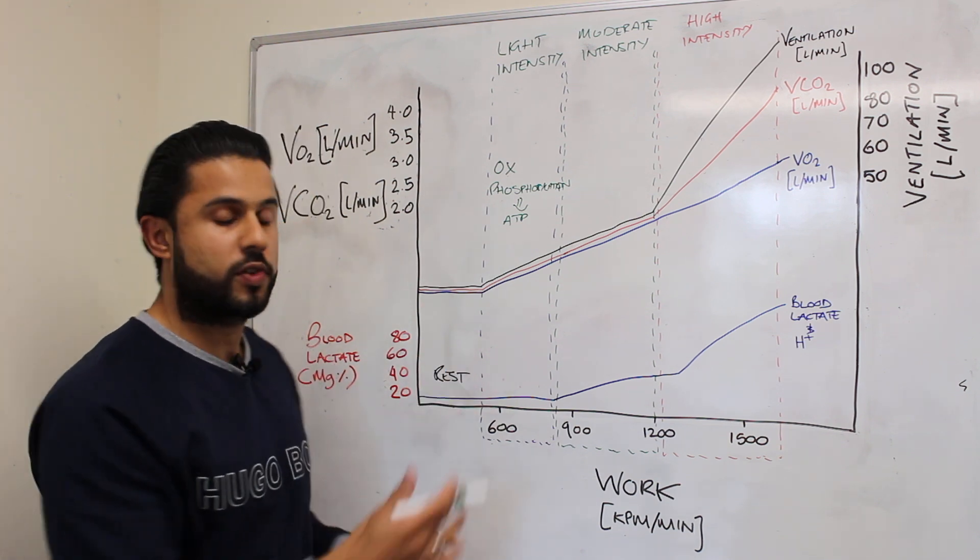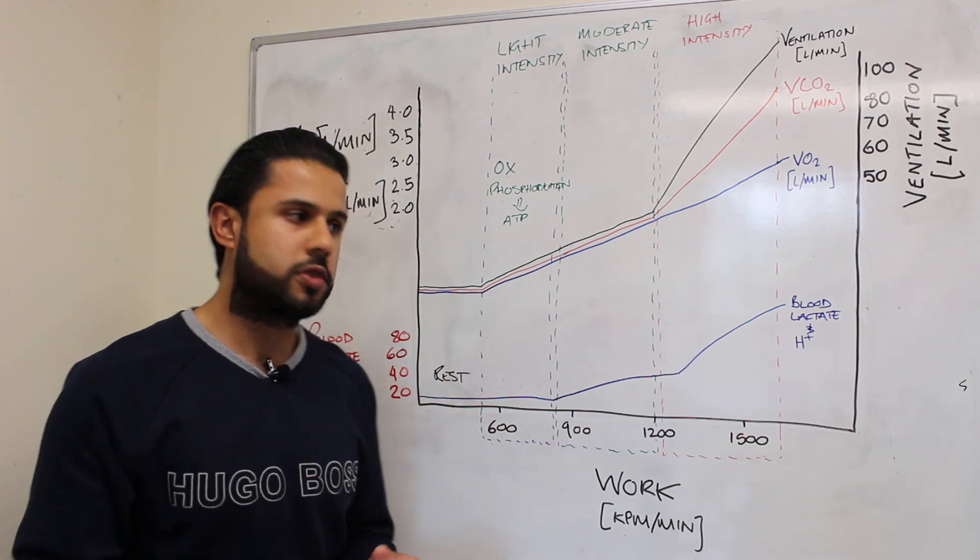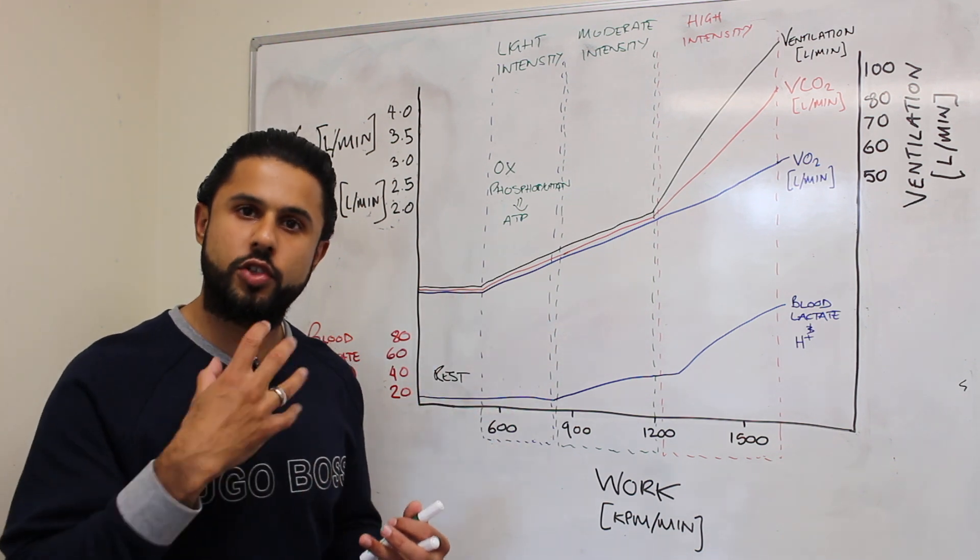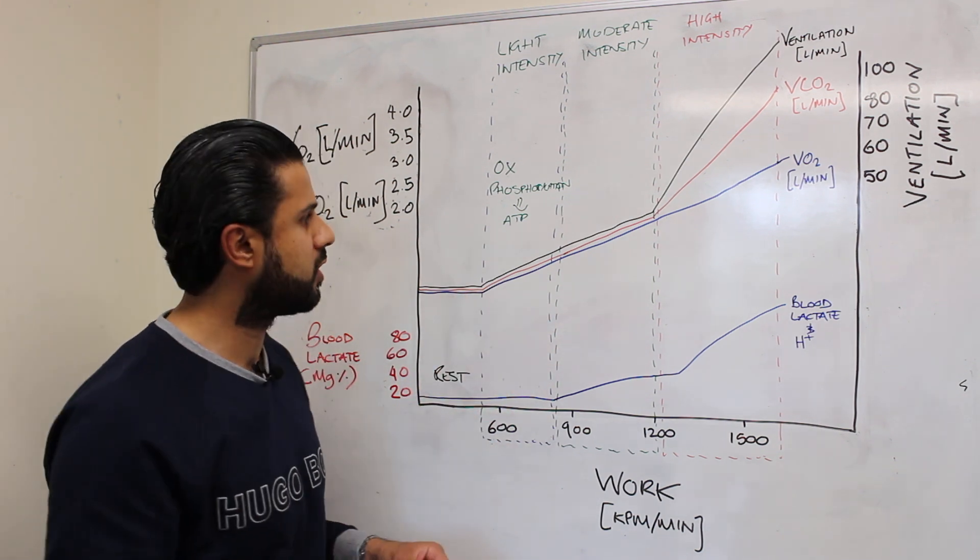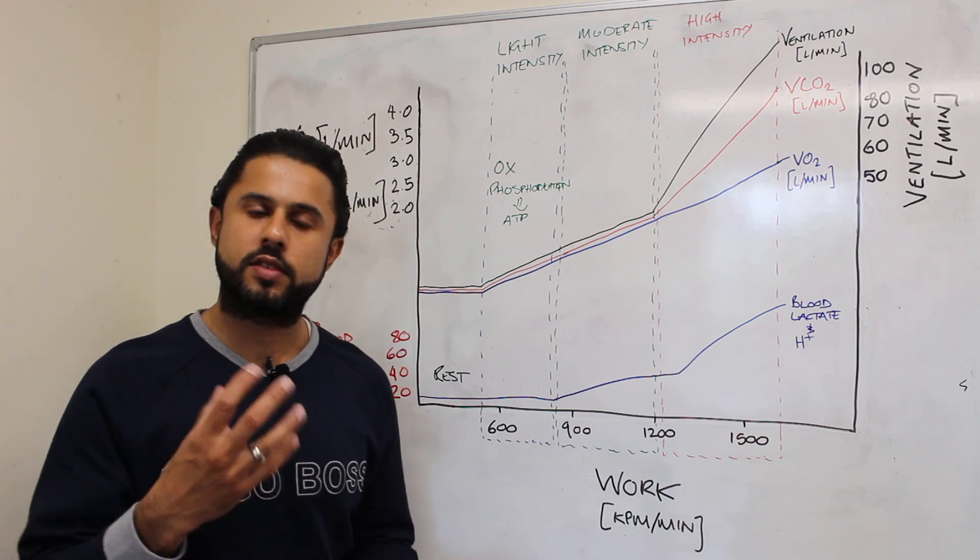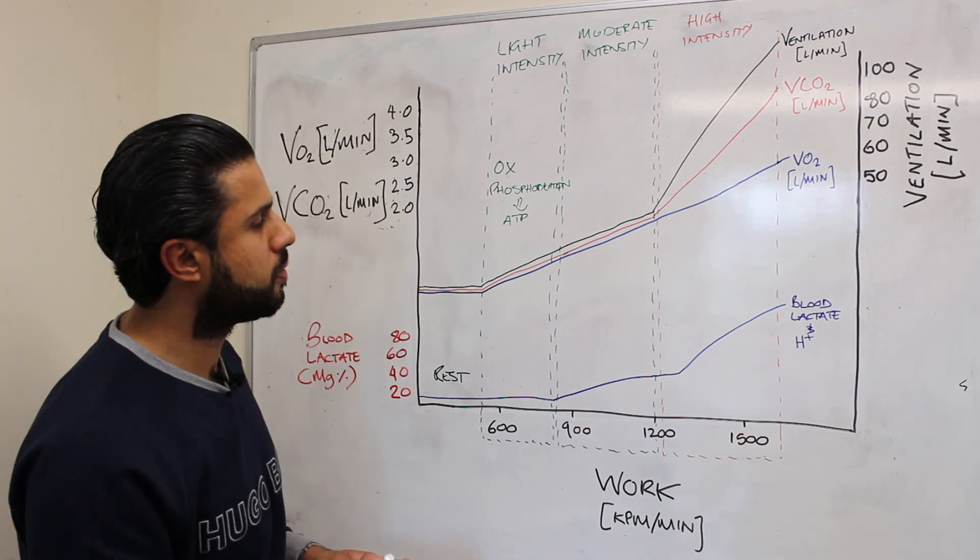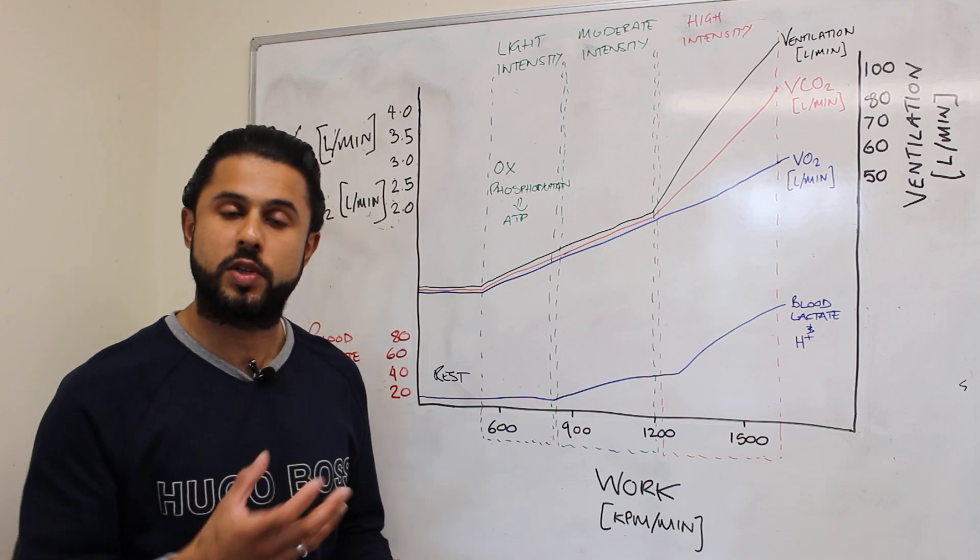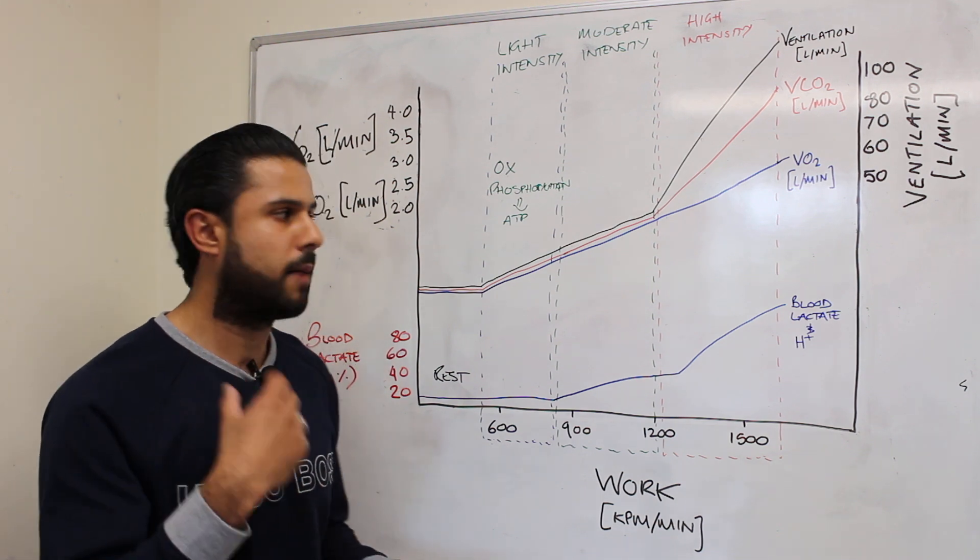So oxidative phosphorylation is an aerobic energy source. And essentially what's happening is we need to have oxygen going into the muscle, into the mitochondria to produce the ATP and there is some CO2 which is also being produced by the muscle tissue which is then being buffered away by bicarbonate towards the lung.